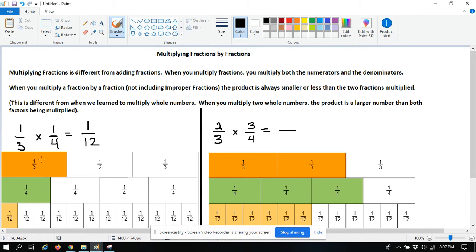So look at the one that we multiplied first, one third. That's how large one third is. That's one equal part out of three equal parts. Then we multiply times one fourth. And that's one equal part out of four equal parts.